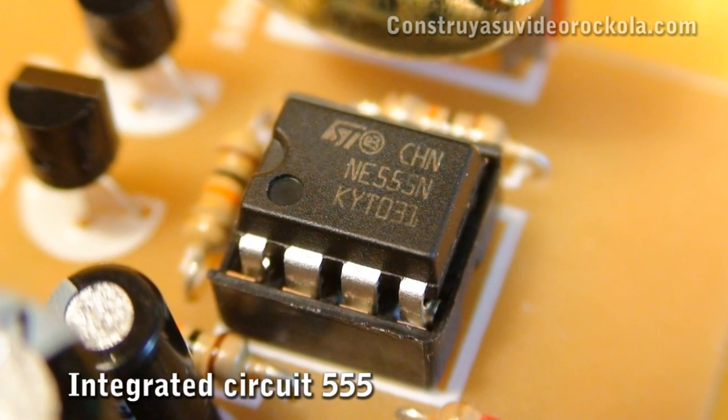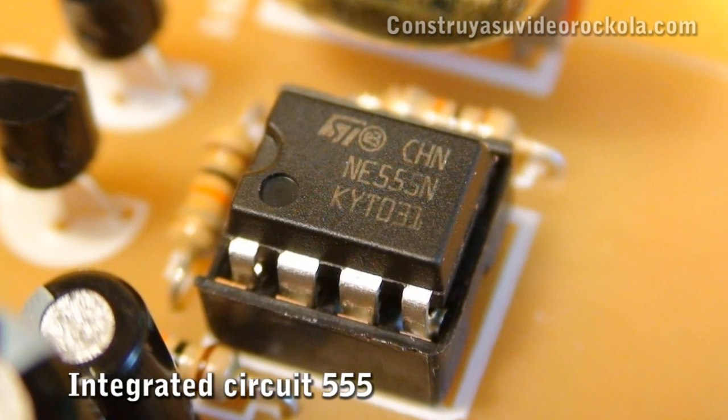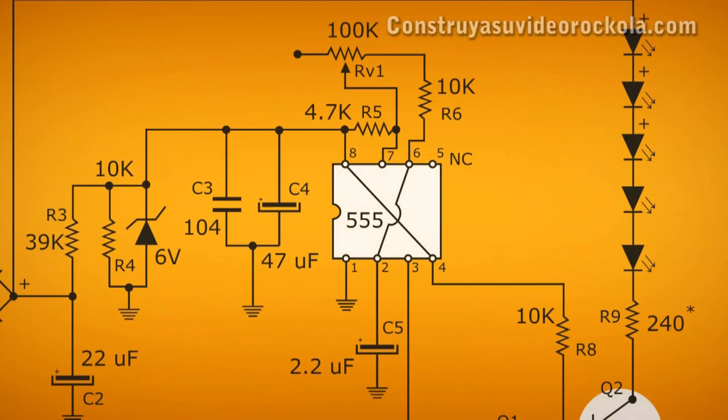The 555 is an integrated circuit used to generate oscillations and time delays with accuracy. In this case we will use it to make an astable oscillator. The working frequency is set by a potentiometer, a pair of resistors, and a capacitor.